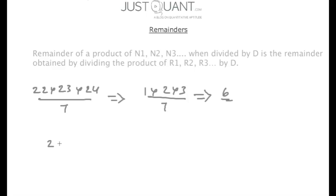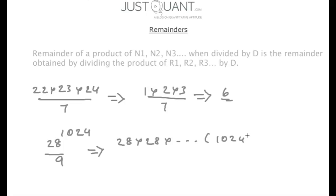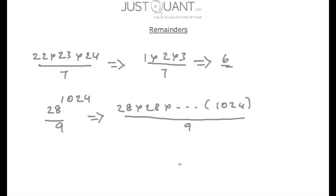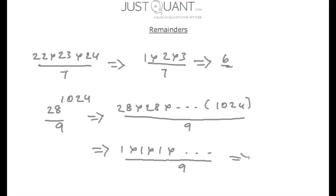Similarly, to calculate the remainder of 28 to the power of 1024 when divided by 9, we write this as 28 multiplied by itself 1024 times. We know that 28 divided by 9 gives a remainder of 1, so this becomes 1 times 1 times 1, for 1024 times, divided by 9. That is simply 1 divided by 9, which gives us a remainder of 1.